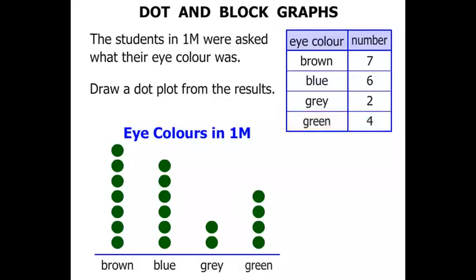So there we have it — that is our dot plot. You can understand why it's called a dot plot; it's full of dots. Fantastic.